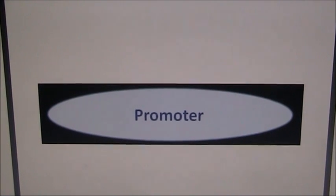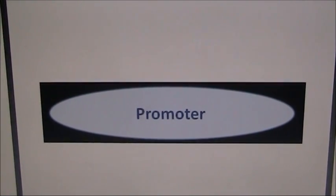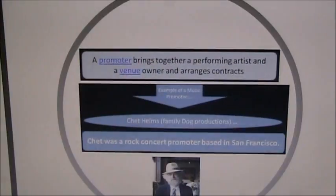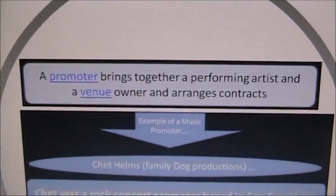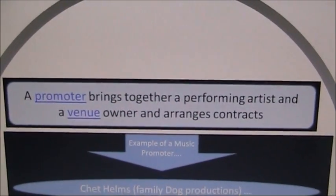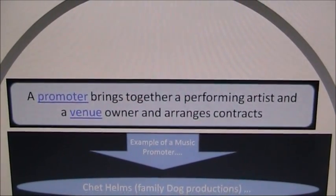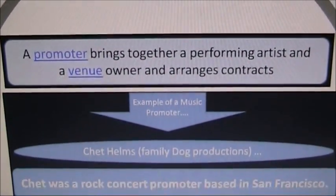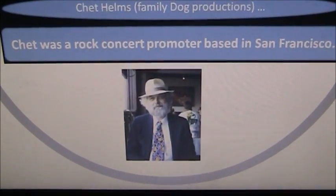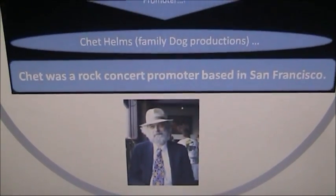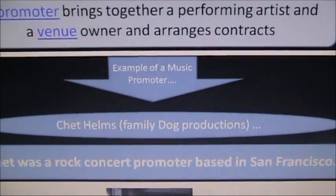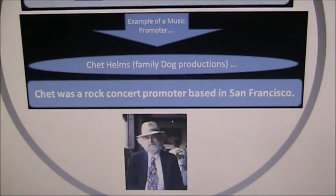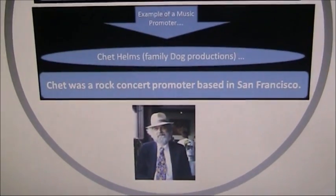If in the exam you're asked to give the definition of a promoter, you'll need to say more than 'somebody who promotes.' A promoter is somebody that brings together performing artists — musicians, singers, bands — with the venues that they want to perform in, and they arrange the contracts to make it all work together. A good example of a promoter would be Chet Helms, the man you can see on screen, who created a company called Family Dog Productions, which enabled him to promote musicians throughout San Francisco as a rock concert promoter.